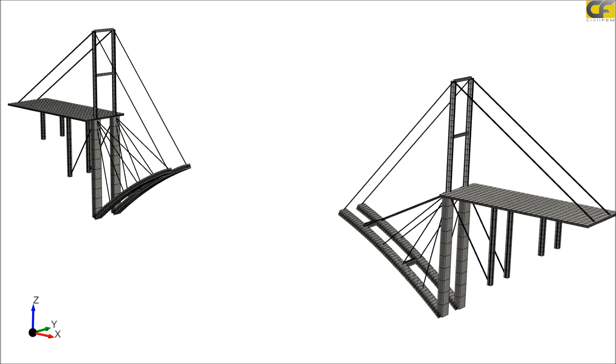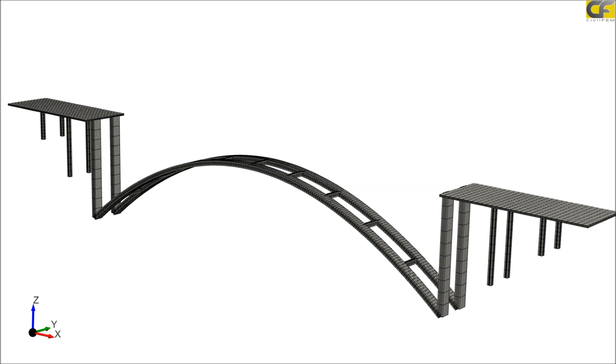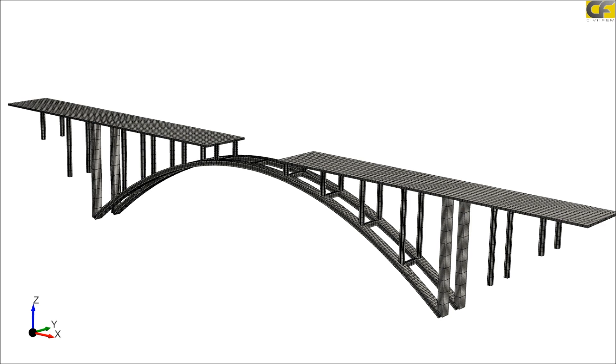Nonlinear staged construction is also an important and strong point in CivilFEM. We can not only deactivate and activate different parts of the model to simulate construction and excavation processes, but CivilFEM material properties are also time-dependent. On every stage we activate the model and the material properties. For example, concrete stiffness in the first stage increases rapidly. CivilFEM activates and deactivates different parts of the model and modifies material properties, so we can perform a really detailed construction and staging process.